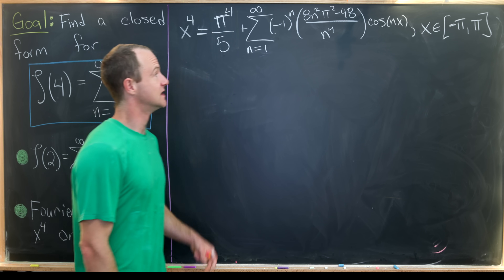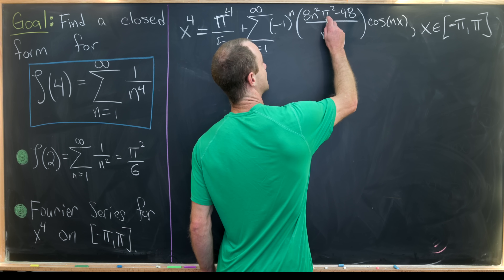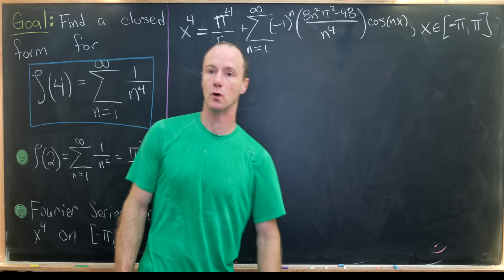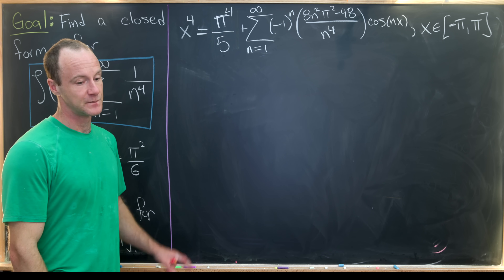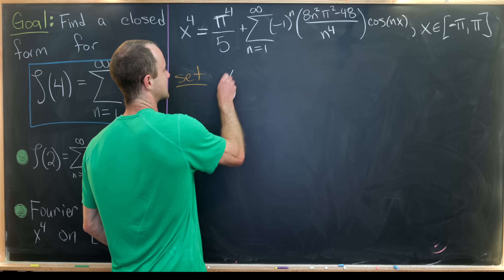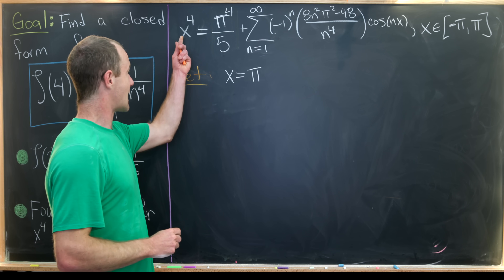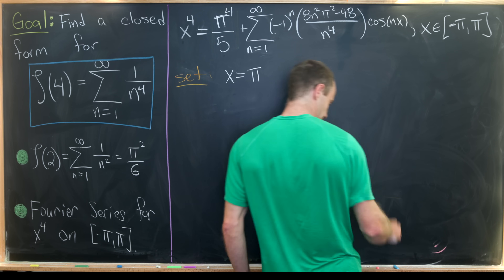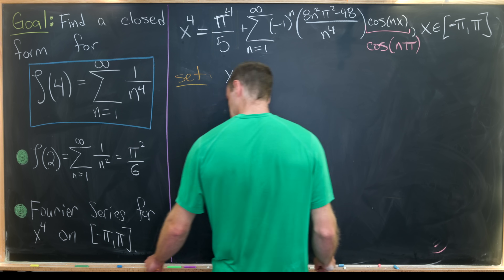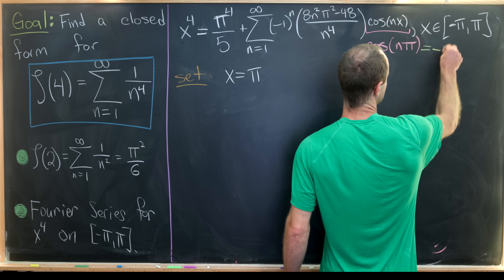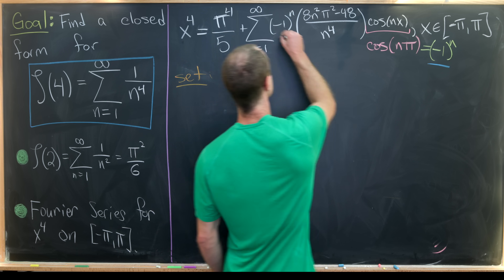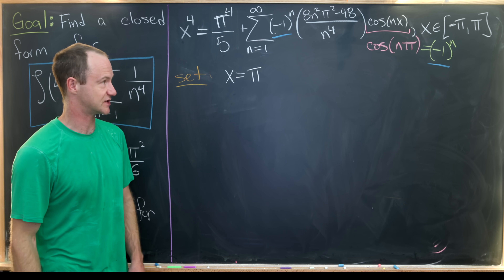We can now extract the sum of reciprocal fourth powers by evaluating the Fourier series at a specific x. We have n⁴ in the denominator of aₙ, which matches our goal. Setting x = π: the left side gives π⁴. On the right, plugging π into cos(nx) gives cos(nπ) = (−1)ⁿ. But there's already a factor of (−1)ⁿ in aₙ, so they multiply to (−1)²ⁿ = 1.